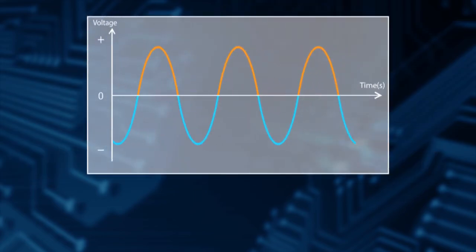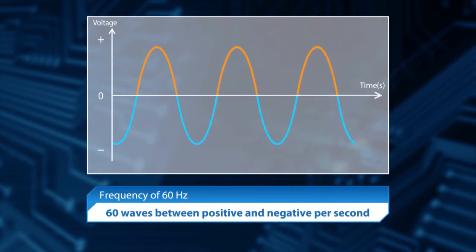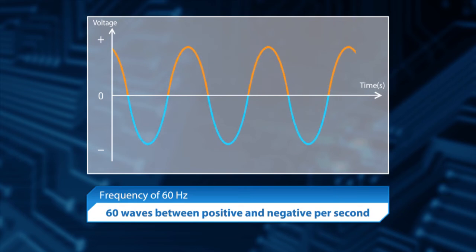Frequency values are usually shown in a graph like this. For example, frequency 60 hertz means that there are 60 waves between positive and negative per second.